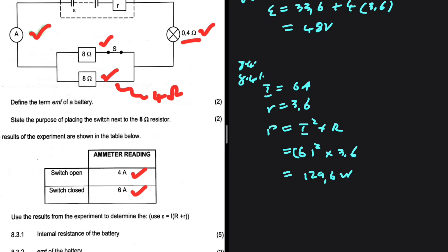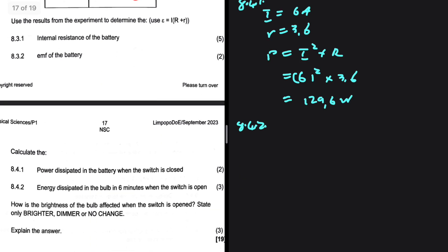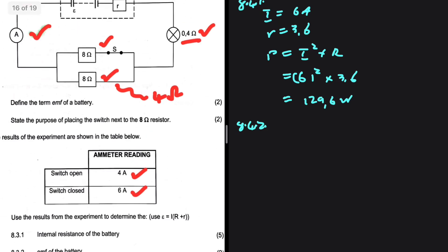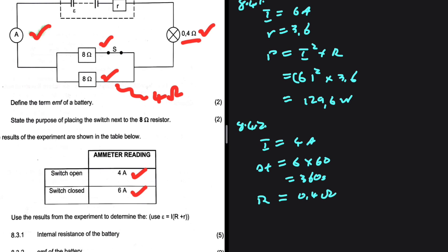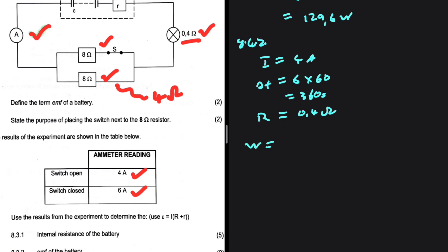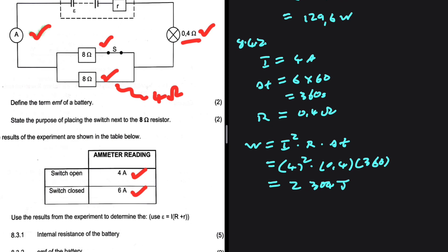For 8.4.2, we find the energy dissipated in the bulb in six minutes when the switch is open. When the switch is open, the current is 4 amps. Time = 6 × 60 = 360 seconds. The bulb has a resistance of 0.4 ohm. Using W = I² × R × Δt: W = 4² × 0.4 × 360 = 16 × 0.4 × 360 = 2304 joules.